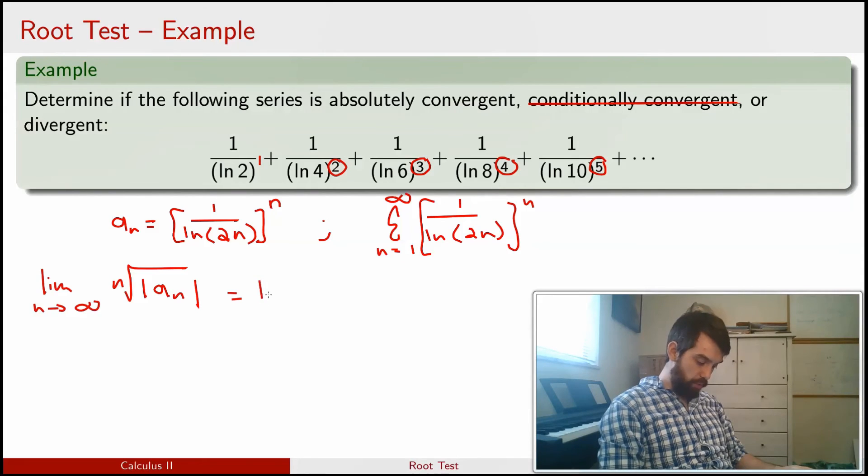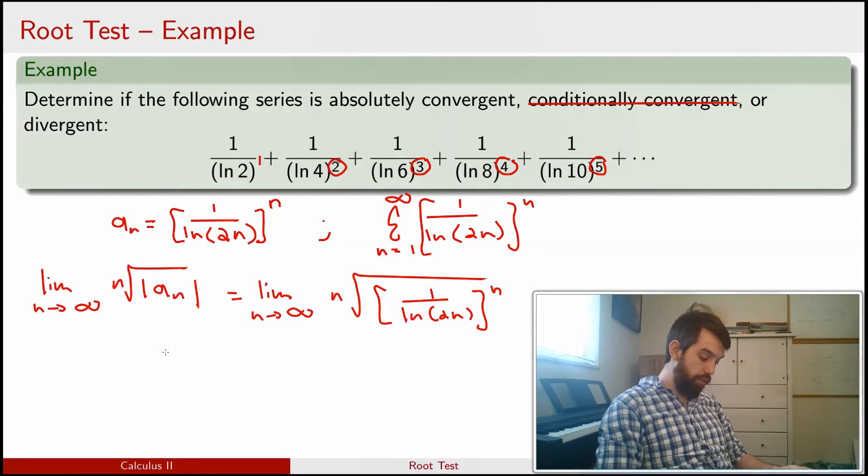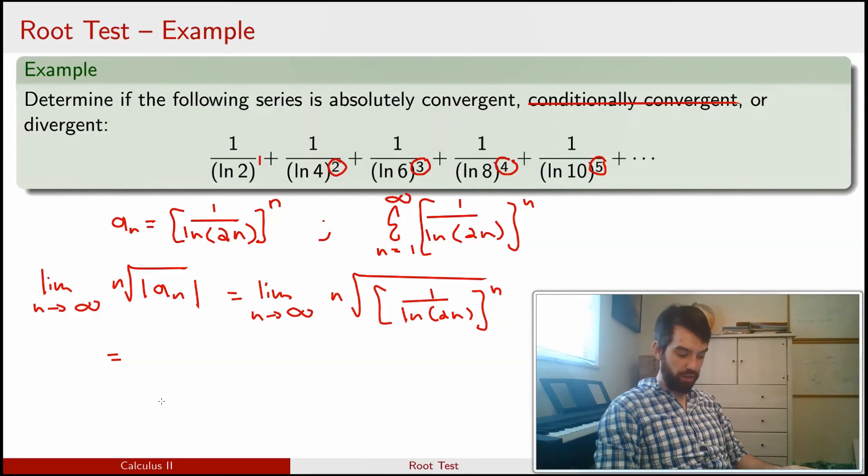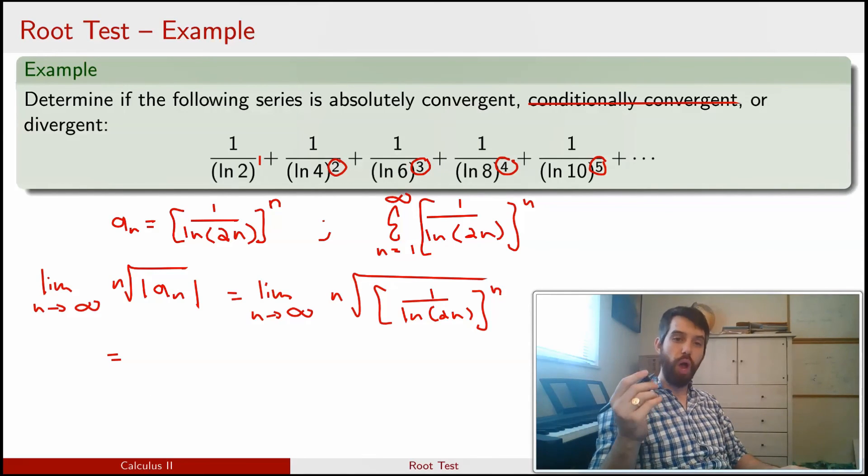Nonetheless, if I write this out, limit as n goes to infinity, this is the nth root of 1 divided by the natural log of 2n, all to the power of n. And note that the nth root and to the power of n cancel. Nth roots are like to the power of 1 over n. So 1 over n times n is just going to be equal to 1.